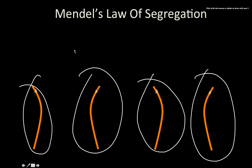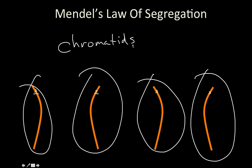The chromatids for the same chromosome will separate into different gametes, and this touches on Mendel's first law — the law of segregation. It was originally stated that alleles for the same gene will separate into different gametes. The big A and the little a are both alleles for the same gene and they separated into different gametes. But the way I'd like you to remember this is by using the word 'chromatids': chromatids for the same chromosome will separate into different gametes.